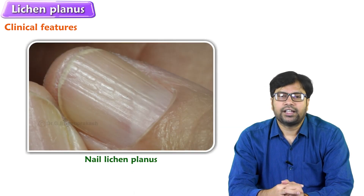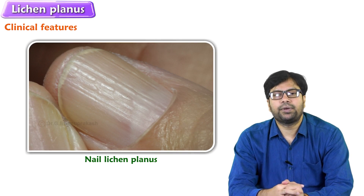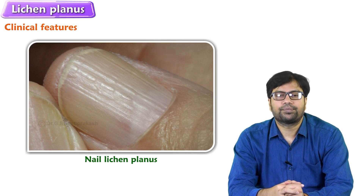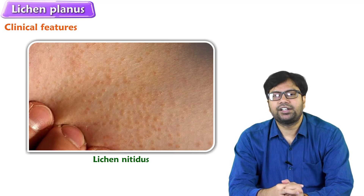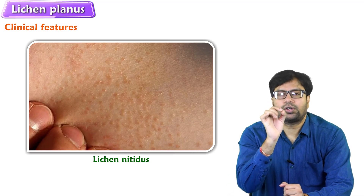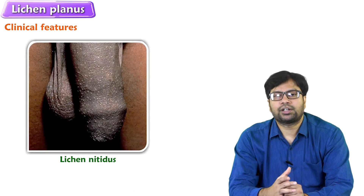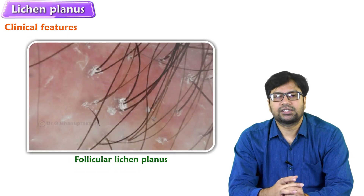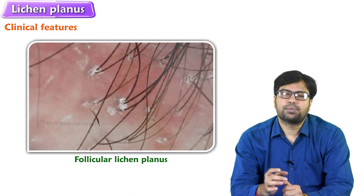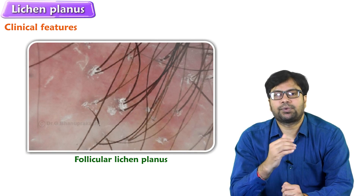Nail lichen planus: nails can have pterygium formation or it may lead to 20-nail dystrophy. Lichen nitides means tiny dot-like lesions — they are called macules or papules — mainly seen on the dorsal part of the penis.